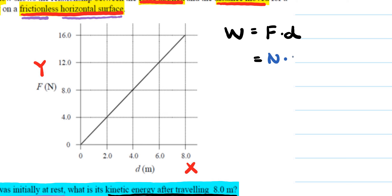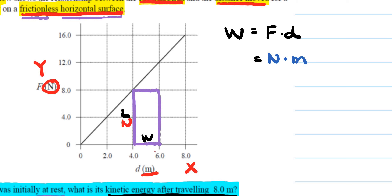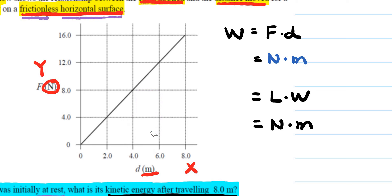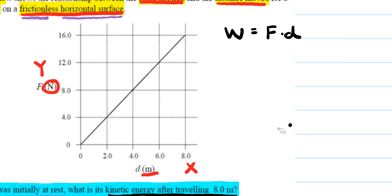Force is measured in newtons and distance is measured in meters, so we need a relationship multiplying newtons by meters. Looking at the area underneath the graph — the area of a rectangle is length times width, where length is in newtons and width is in meters. So the area underneath the graph equals the work done, because force times distance is the area under the curve.